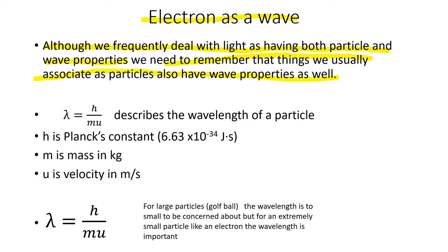There's an equation that deals with the wavelength of a particle. You need to see this equation in order to understand why for the electron we need to treat it as having wave-like properties. Lambda equals h — Planck's constant — divided by m times u. This describes the wavelength of the particle.